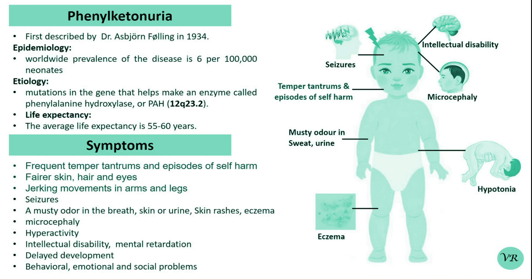This results in the accumulation of Phenylalanine in the blood, which is converted into phenylpyruvate and other metabolites that can be harmful, especially to the brain, causing intellectual disability and other neurological problems.